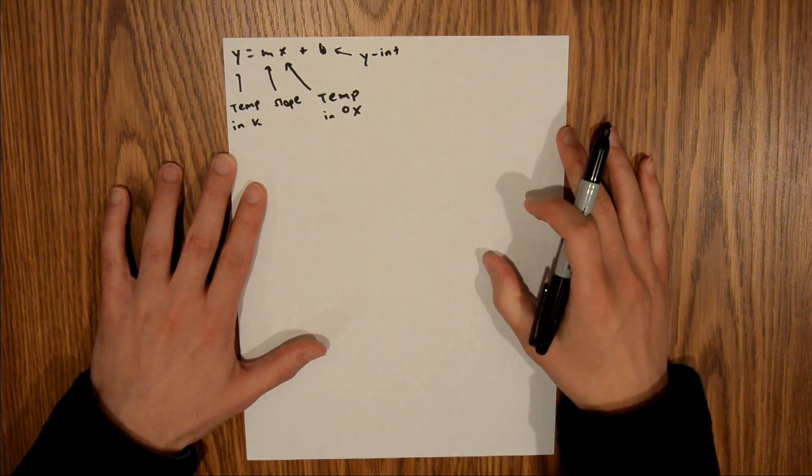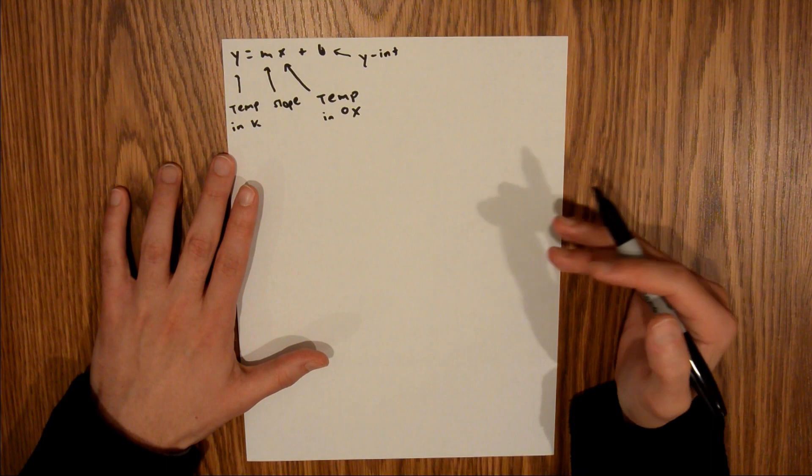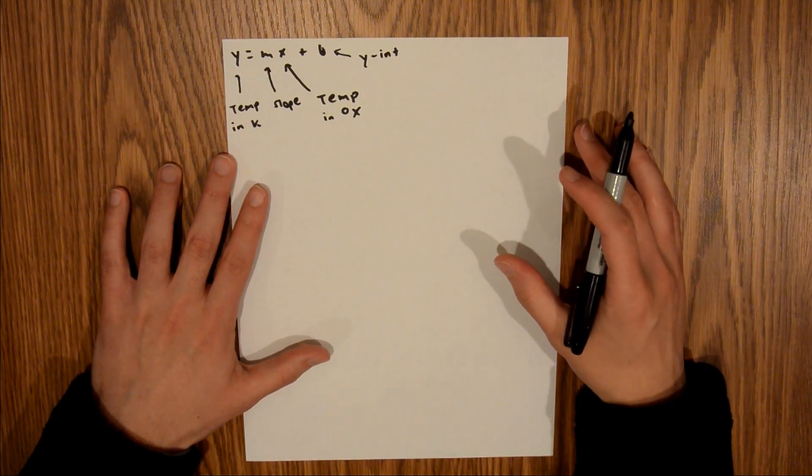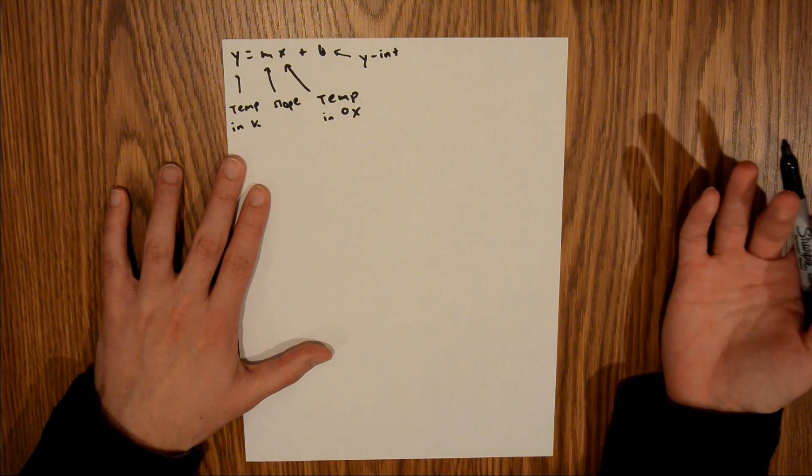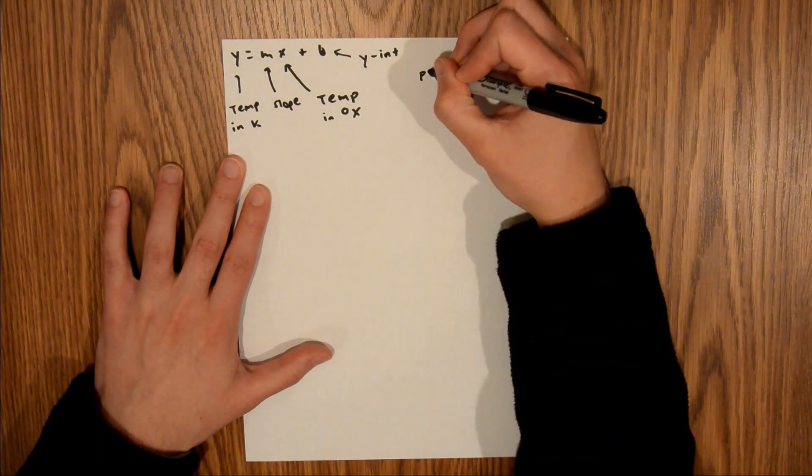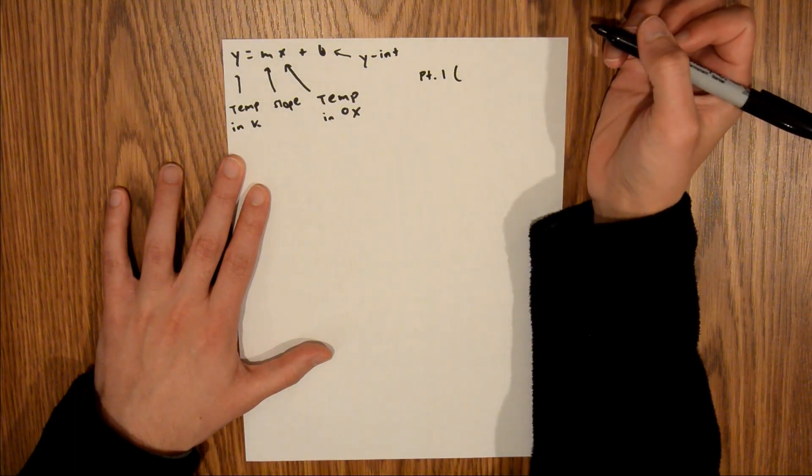Now, it is not explicitly stated in the problem, but we are essentially given two data points, x comma y, and those are the freezing temperatures and the boiling temperatures. I'm just going to write those out over here. Point 1, I'm going to make this one the boiling data point,